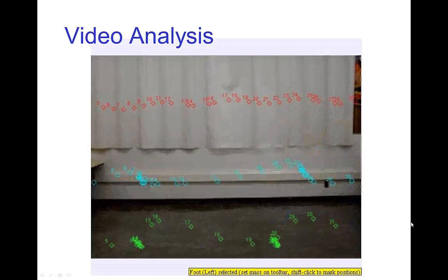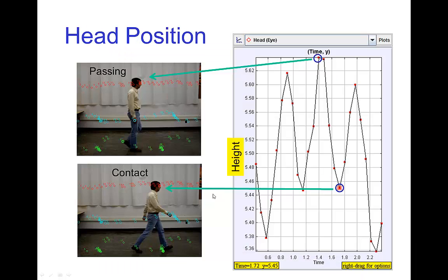This is done using a free tracking software. Just looking at the position of the eye, which is easy to mark from frame to frame, we see that there's a general up and down motion in the body, and this motion tends to put the head highest around the passing position and lowest at the contact pose.